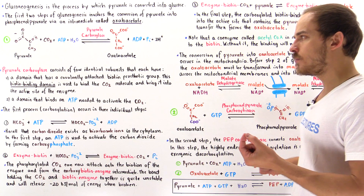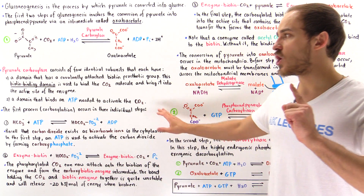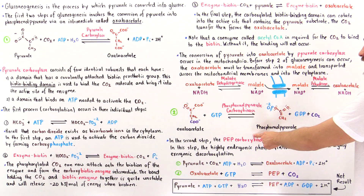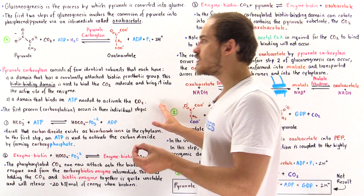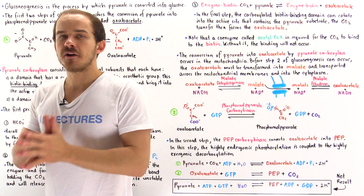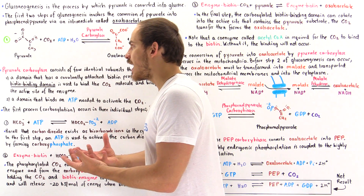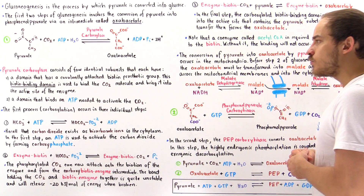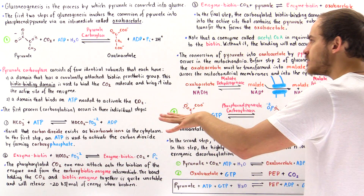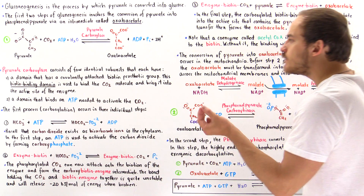Gluconeogenesis is not simply the reverse of glycolysis, because glycolysis itself is a highly exergonic process. For instance, in step 10 of glycolysis we transform pyruvate into phosphoenolpyruvate using a very exergonic process. If we simply reversed that step in gluconeogenesis, that reverse step would be very endergonic — it would require a large input of energy. So to bypass that highly endergonic process, we create a different reaction pathway, a two-step process that transforms pyruvate into phosphoenolpyruvate using a more favorable reaction.